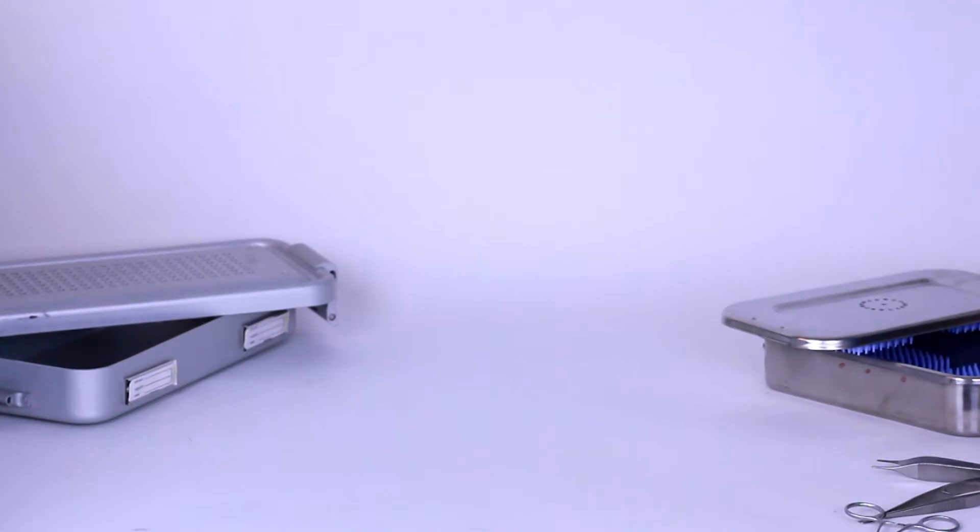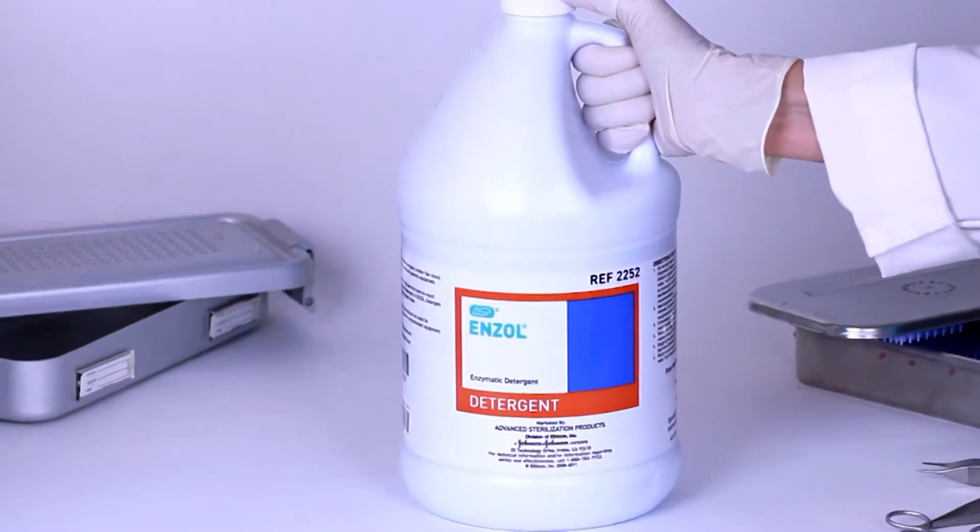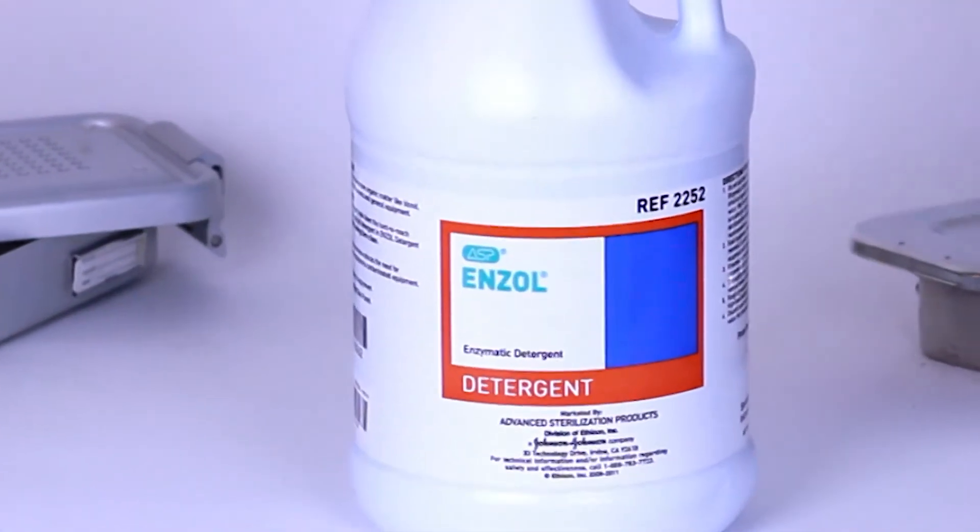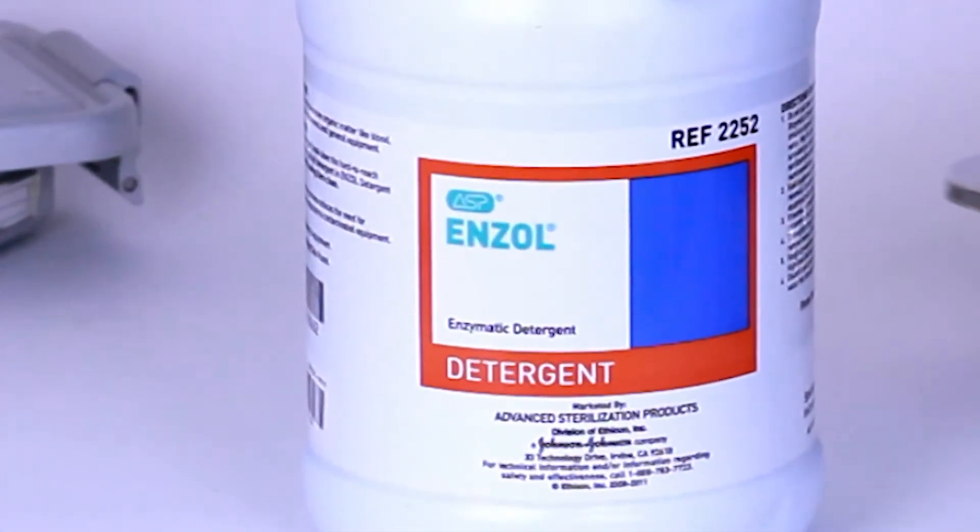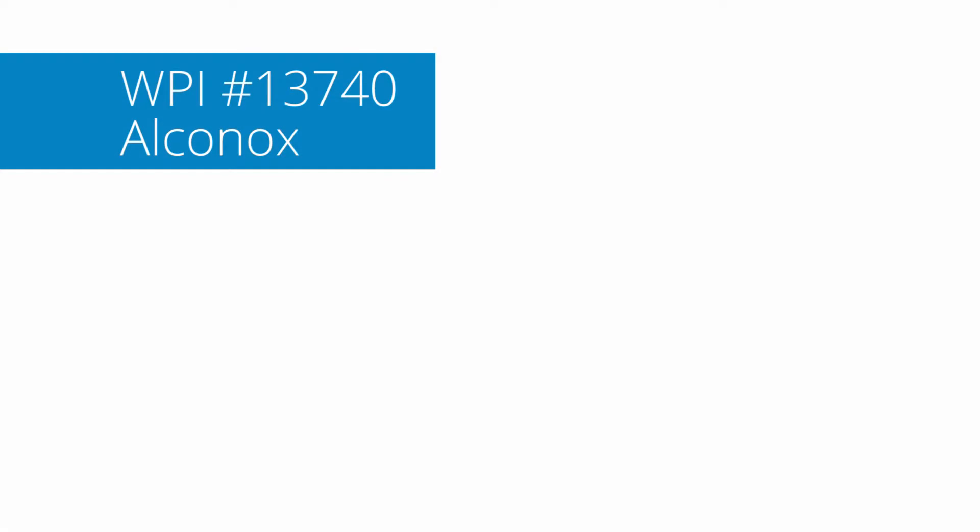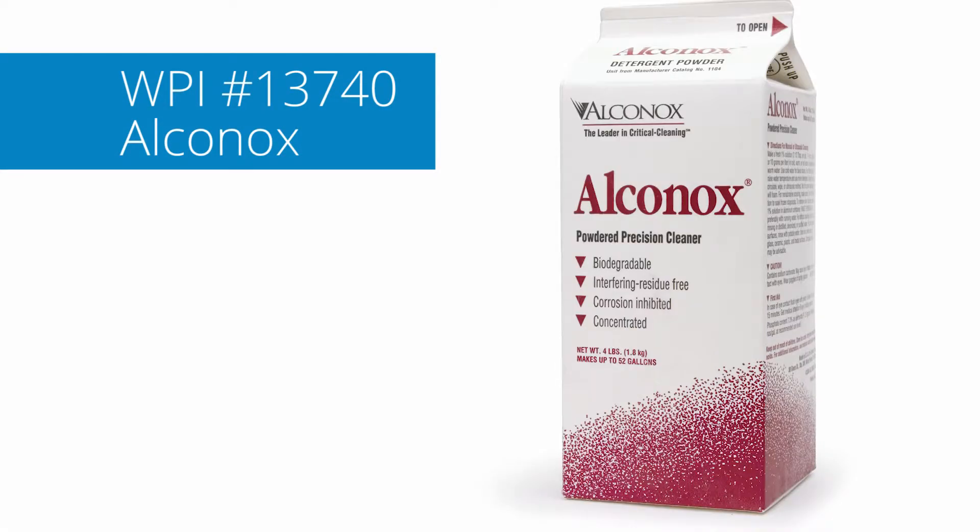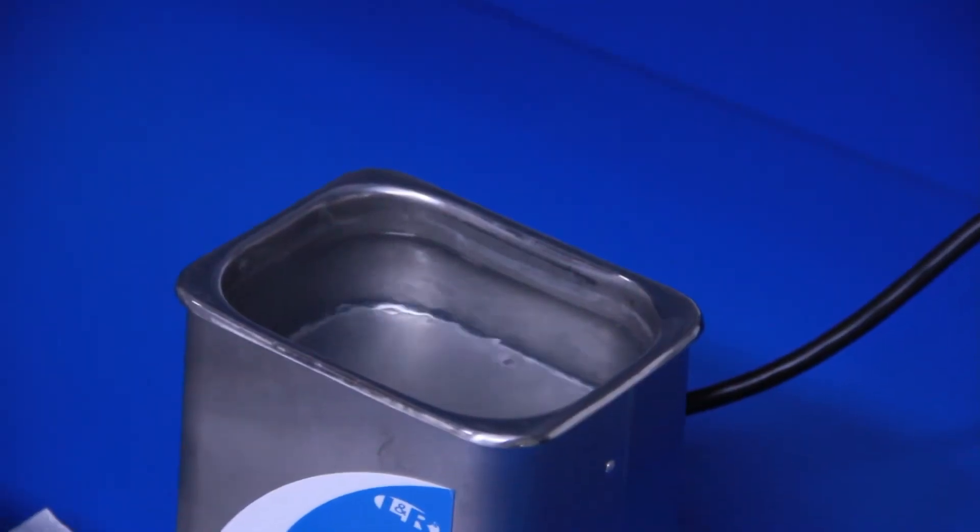Before you begin, fill the ultrasonic cleaner with deionized water and enzymatic cleaner like Enzol, according to the manufacturer's recommendation. You may also use a neutral pH or mild alkaline detergent like Alconox. Run the cleaner for several minutes to allow the temperature to equilibrate and to remove any gases from the solution.